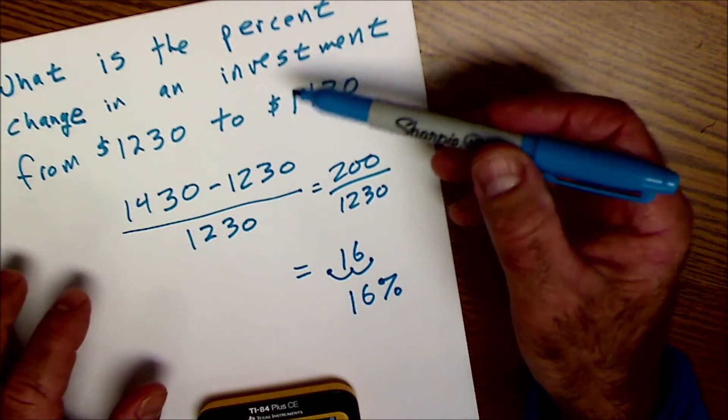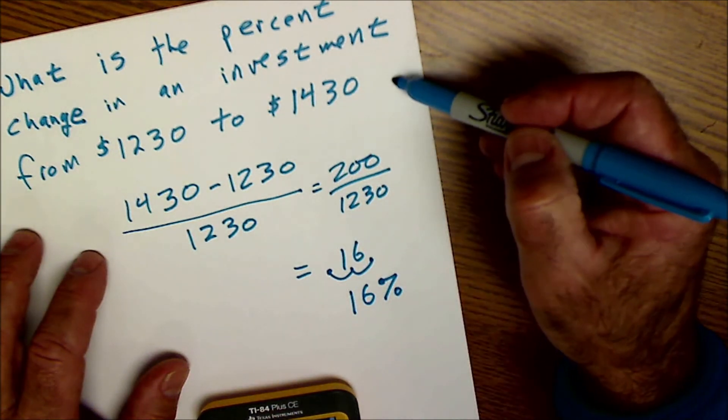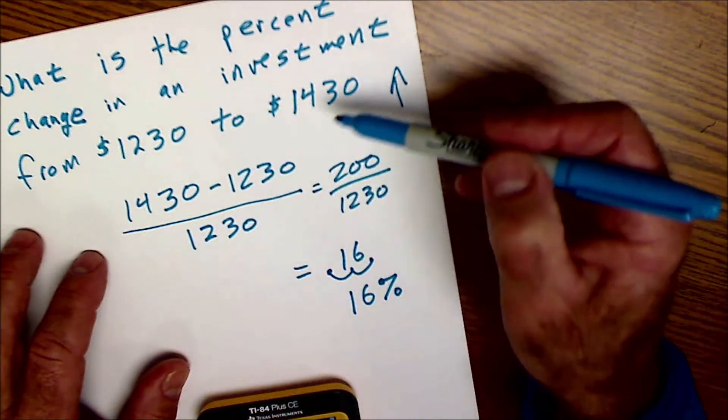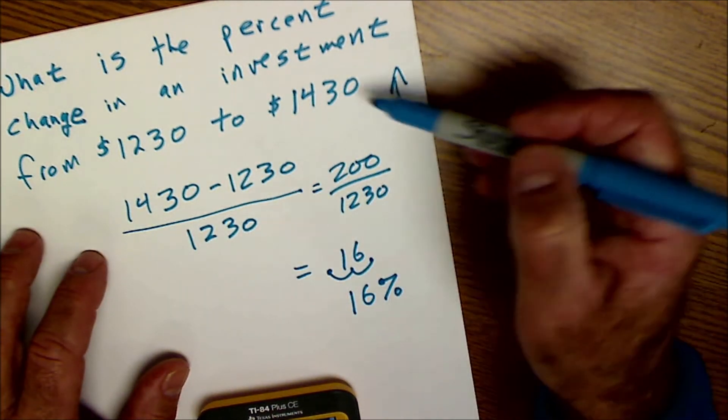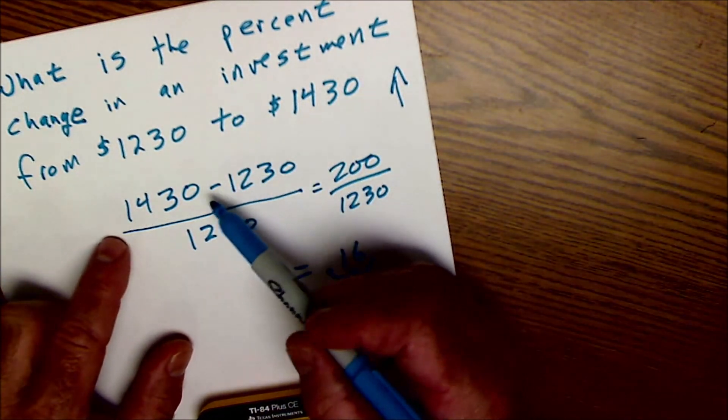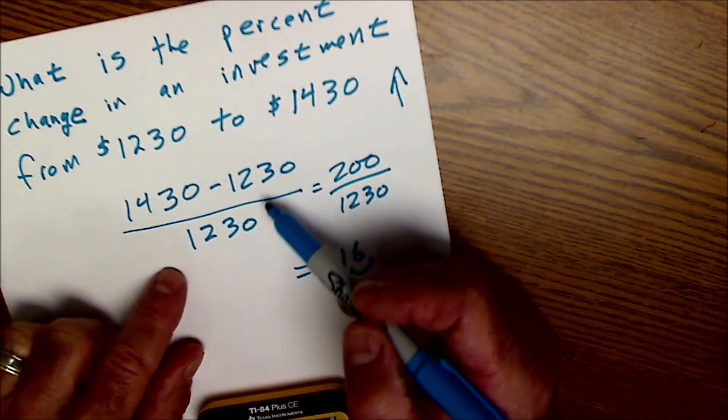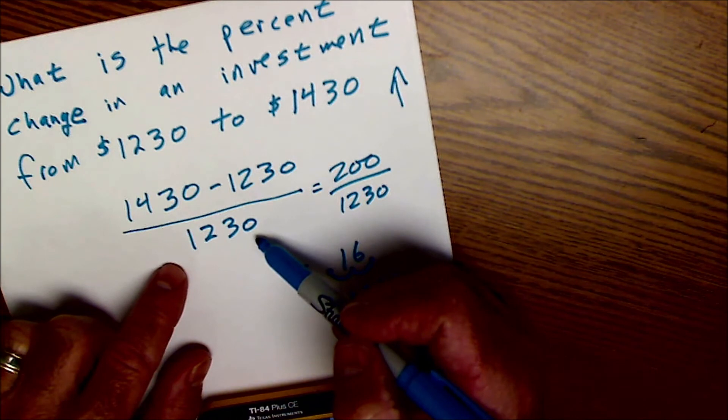The first thing you really need to define is whether you're going from a small number to a big number, and that would be increase, or a big number to a small number, that would be decrease. But the operation is the same. It's always going to be the larger number minus the smaller number, which is going to give you the amount of change, divided by the original number.